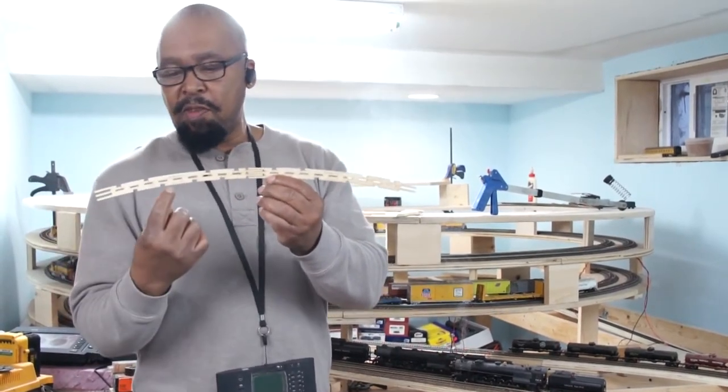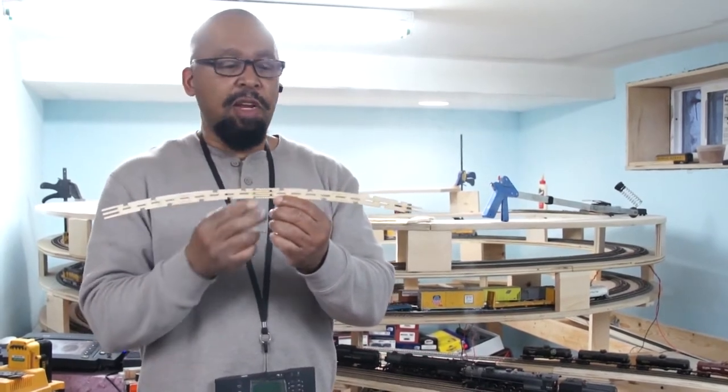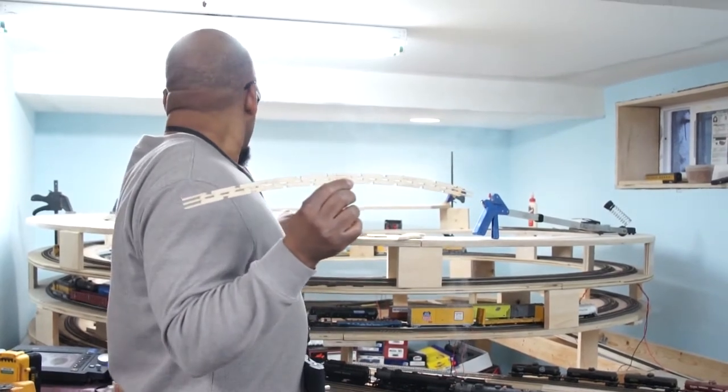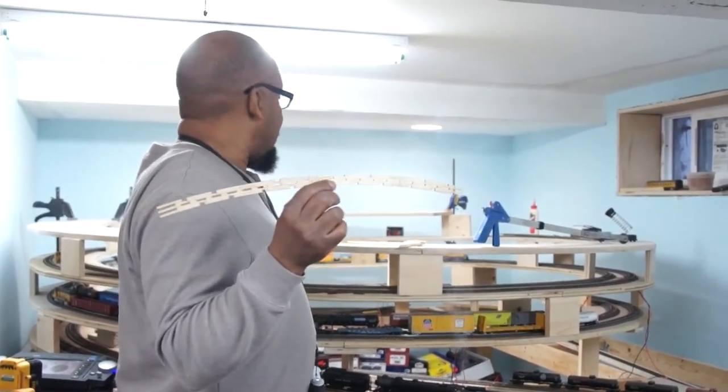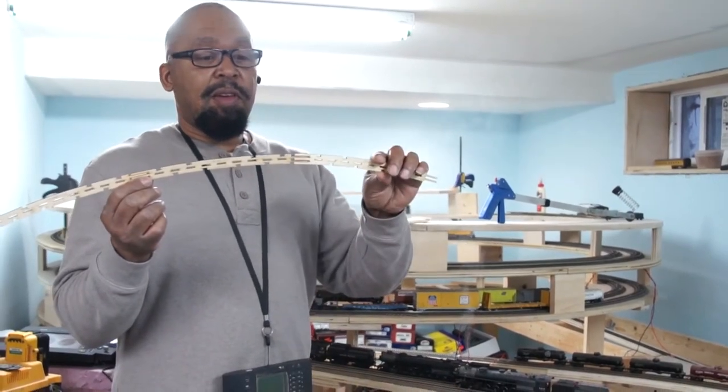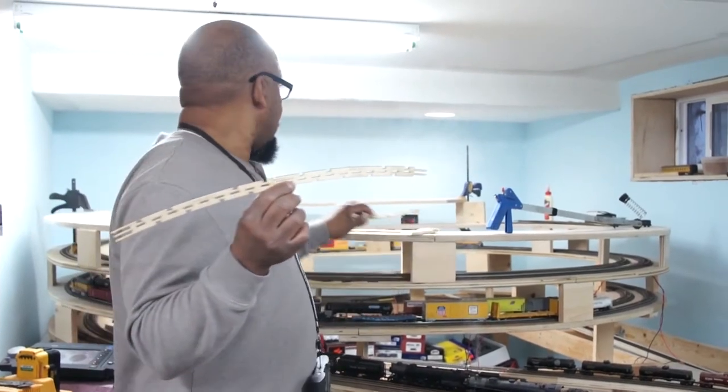Each one has a radius number on top, which I believe this is a 35 radius. And the sweet thing about these Sweet Sticks is I can take a 35 radius to a 38 radius and connect it together. This way it gives you an easement coming in to the 35.